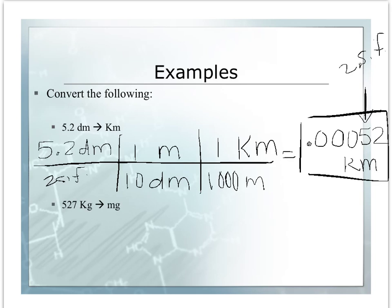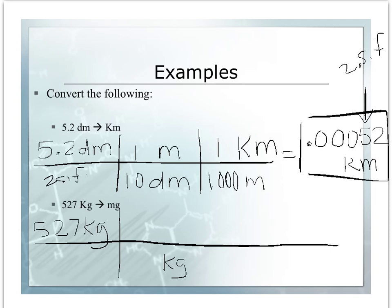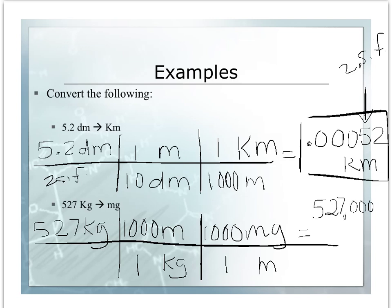Our next problem is 527 kilograms to milligrams. We are going to start out with our 527 kilograms. Keep your units in your dimensional analysis. It's going to be very important. We're going to go from kilograms to meters, our base unit. Then meters to milligrams. And one kilogram is 1,000 meters, and one meter is 1,000 milligrams. If you put this into your calculator, you're going to put 527 times 1,000 times 1,000, and you're going to get 527,000,000 milligrams.